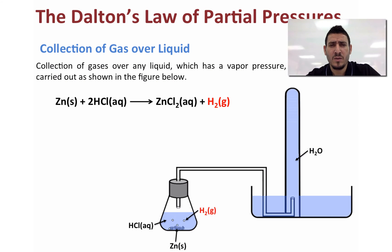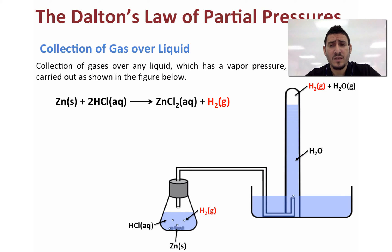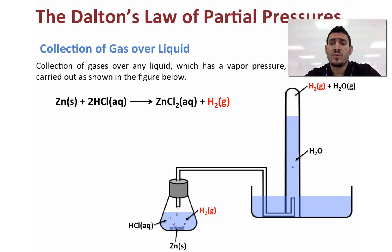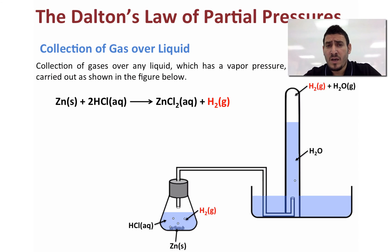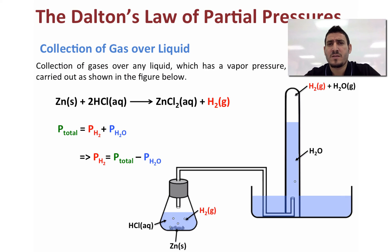Consider the reaction between zinc solid and an aqueous solution of hydrogen chloride. This reaction produces hydrogen gas, which is collected over water using a standard setup. However, at the same time the hydrogen gas is collected, water vapor is also present — so the collected gas is not pure hydrogen but a mixture of hydrogen and water vapor. To find the pressure of hydrogen alone: P_H2 = P_total − P_water vapor.